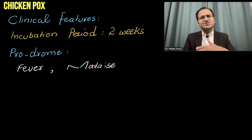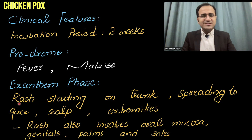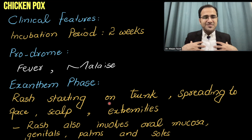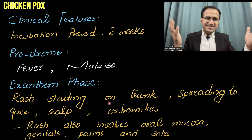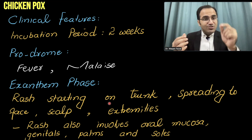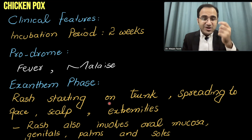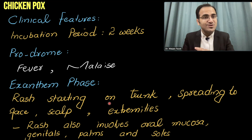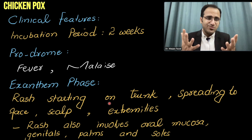These viral infections are associated with severe body aches. Then, after the prodromal phase, there is the exanthem phase. In the exanthem phase, rash starts to appear on the trunk and spreads towards the face, extremities, even within the scalp. It also involves the oral mucosa, buccal cavity, the genitals, and the palms and soles. It almost involves every part of the body.